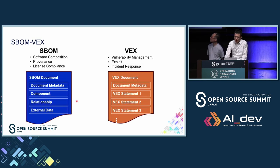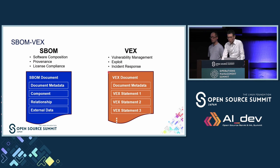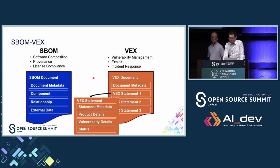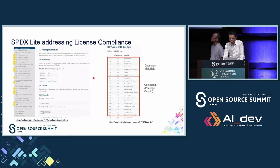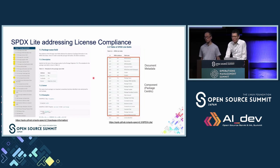SBOMs and VEX are essential to improving information sharing because they are machine-readable data. SBOMs include software composition, provenance, license, and copyright details for license compliance. VEX handles vulnerability management and is used with security advisories during incident response — typically SBOMs and VEX link to CVEs and affected components. Many of you managed software composition before the word 'SBOM' became popular. SPDX Lite is one of these early initiatives; it is a subset of SPDX focused on key information like package details.